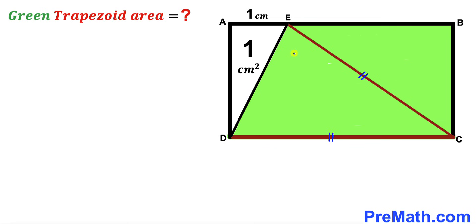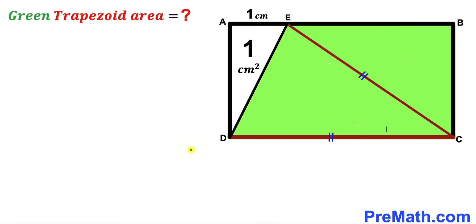In other words, triangle CDE is an isosceles triangle. Our task is to calculate the area of this green shaded trapezoid EBCD.